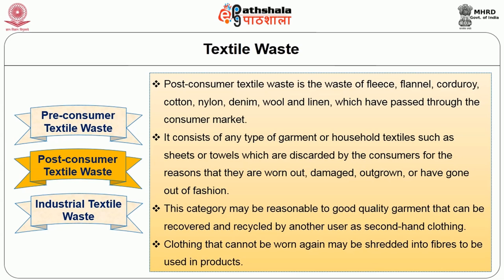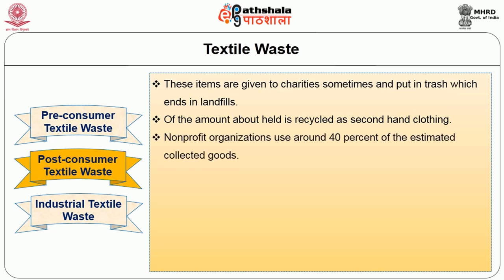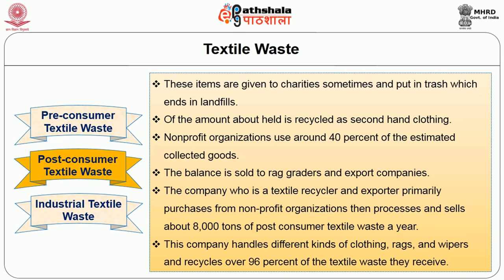Clothing that cannot be worn again may be shredded into fibers to be used in other products. These items are sometimes given to charities, or put in trash which ends up in landfills. Non-profit organizations hold around 40% of the estimated collected goods; the balance is sold to rag graders and export companies. A textile recycler and exporter primarily purchases from non-profit organizations, then processes and sells about 8,000 tons of post-consumer textile waste a year, recycling over 96% of the textile waste they receive.